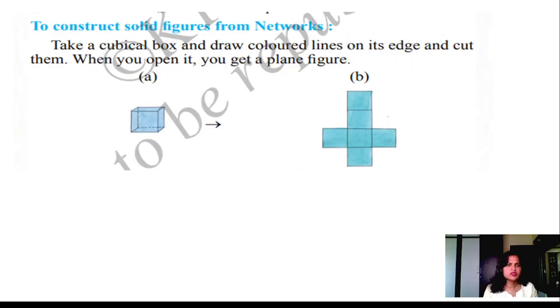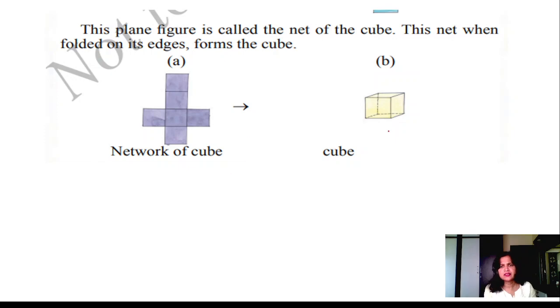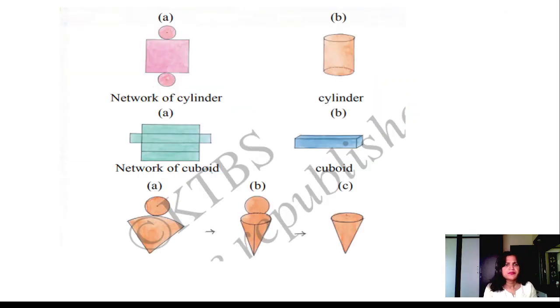To construct solid figures from the network, take a cuboidal box. When you go to the bakery, they have a plain box like this. They fold it into the shape and keep the cake inside. When you go to Pizza Hut, they have boxes in the shape like this. They fold it and make the box in front of you and put the pizza into it. A network of the cube is like this. When you fold it, it becomes like this. A network of the cylinder is like this: one top, one below, the circles are there, around it is a rectangle. Then if you roll it, it becomes the cylindrical shape. Network of the cuboid is like this. It becomes like this. And this is the network of the cone.